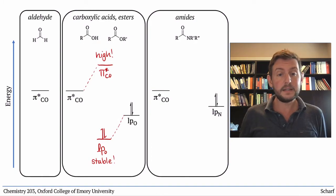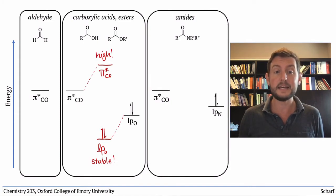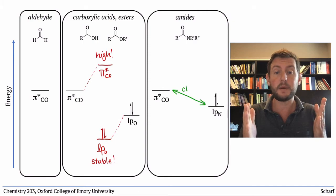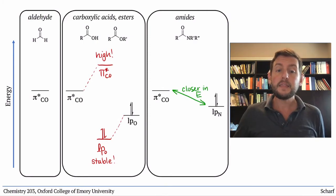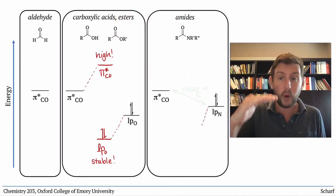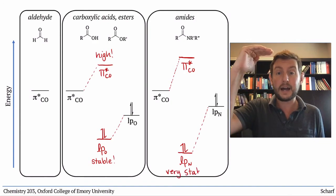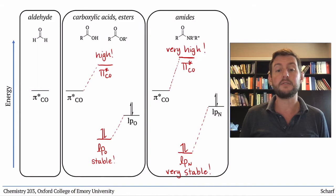For the amide, the nitrogen lone pair is higher in energy than the oxygen ones we just saw, since N is less electronegative than O. So the lone pair overlaps better with CO pi star and the effect is even greater. That nitrogen lone pair is quite stabilized and the CO pi star orbital is pushed quite high in energy. So amides are the least electrophilic of all the carboxylic acid derivatives.